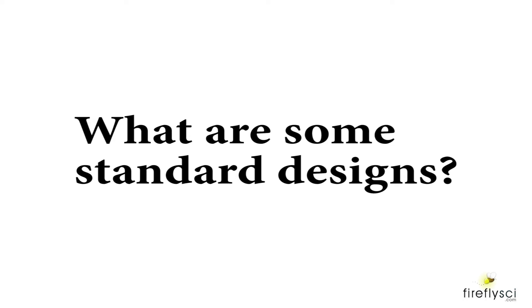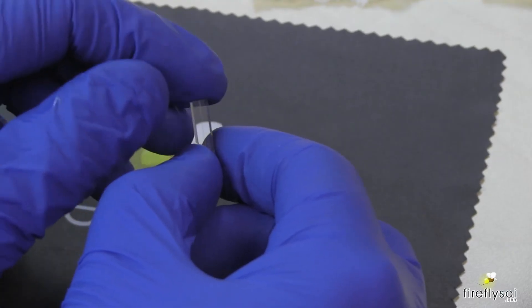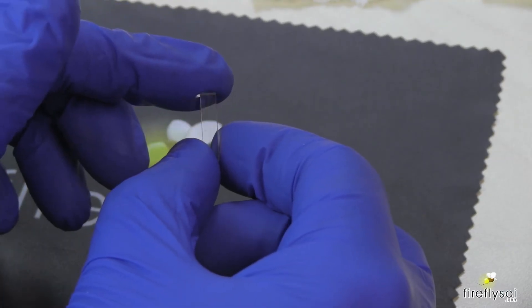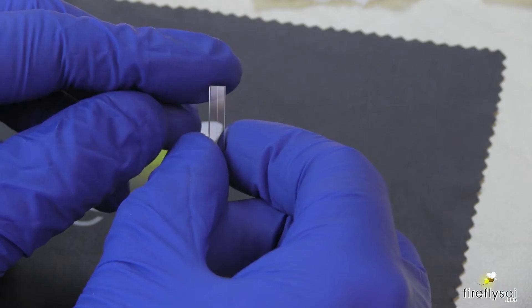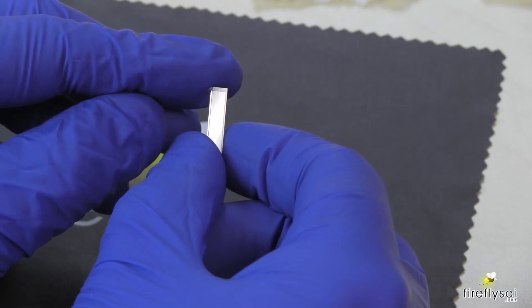What are some standard designs? This is what a basic flow cell looks like. All flow cells are based off this basic design. You can see the tiny channel on this flow cell right here, right down the middle there.